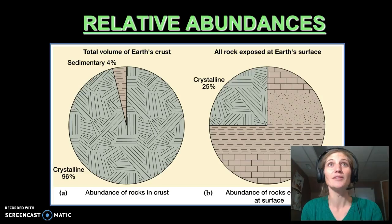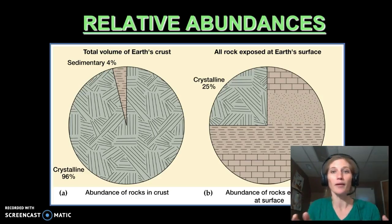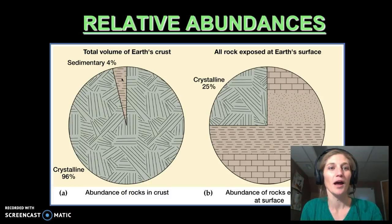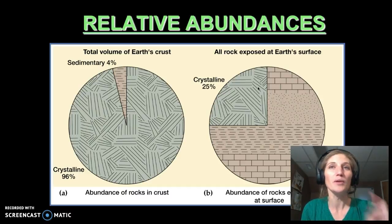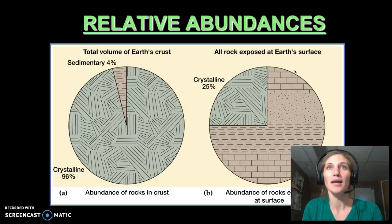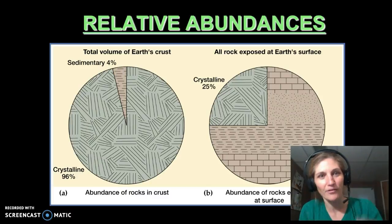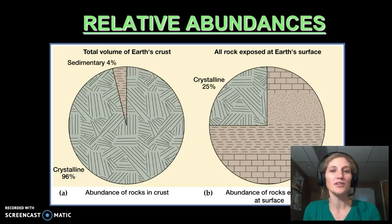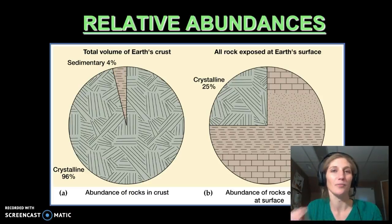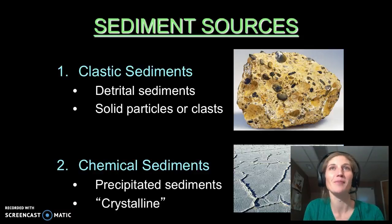Sedimentary rocks make up only 4% of the Earth's crust, but when you go out and look at the landscape around you, sedimentary rocks make up 75% of the rocks you see at the Earth's surface. That's because they're forming right at the Earth's surface, and the crust is very, very thick. They're an important thing to get to know because you will see them a lot. They're my favorite type of rocks, I must admit.